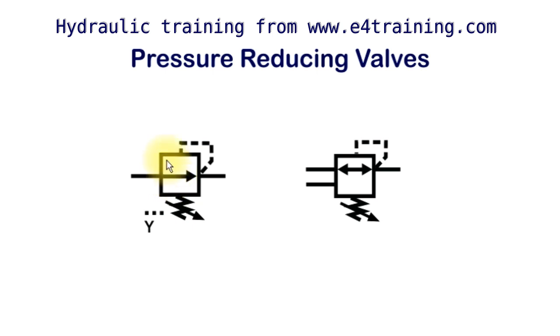Now there are other versions. This is another common version of reducing valve, and the difference here is that we've got the arrow in both directions and a third line.